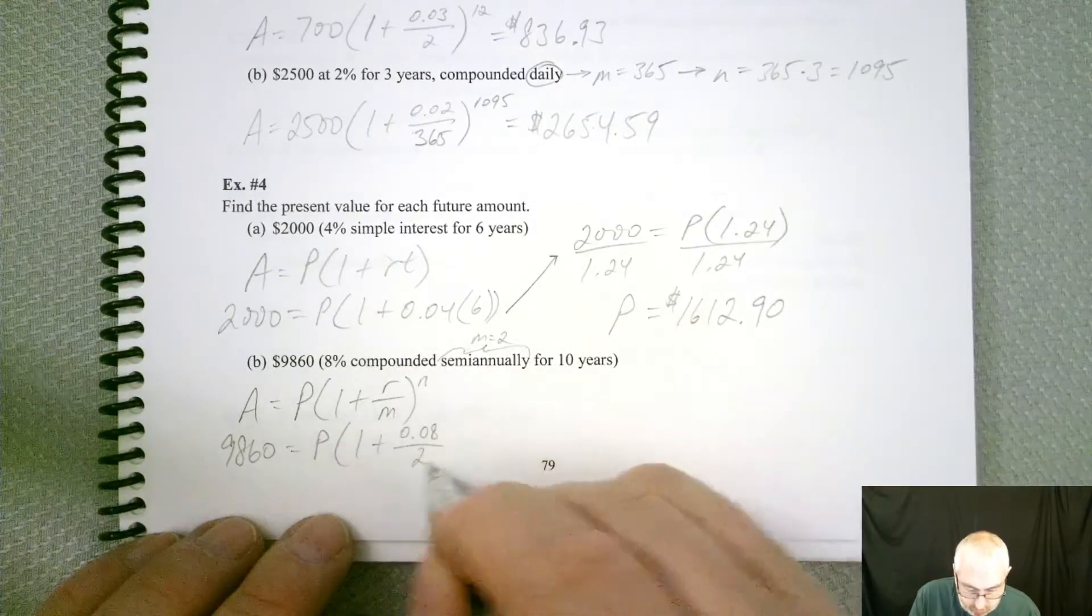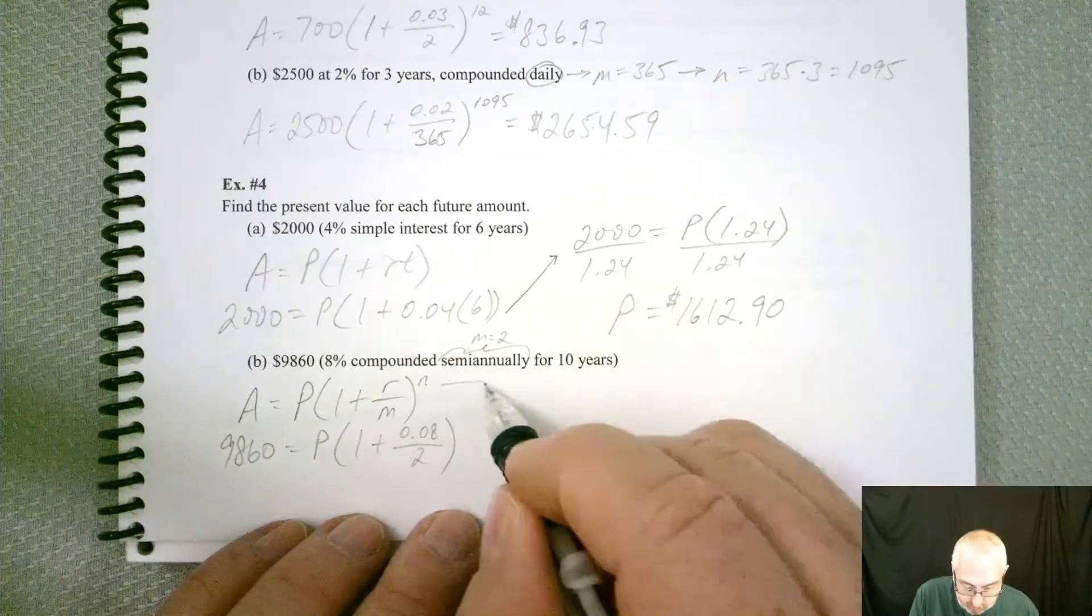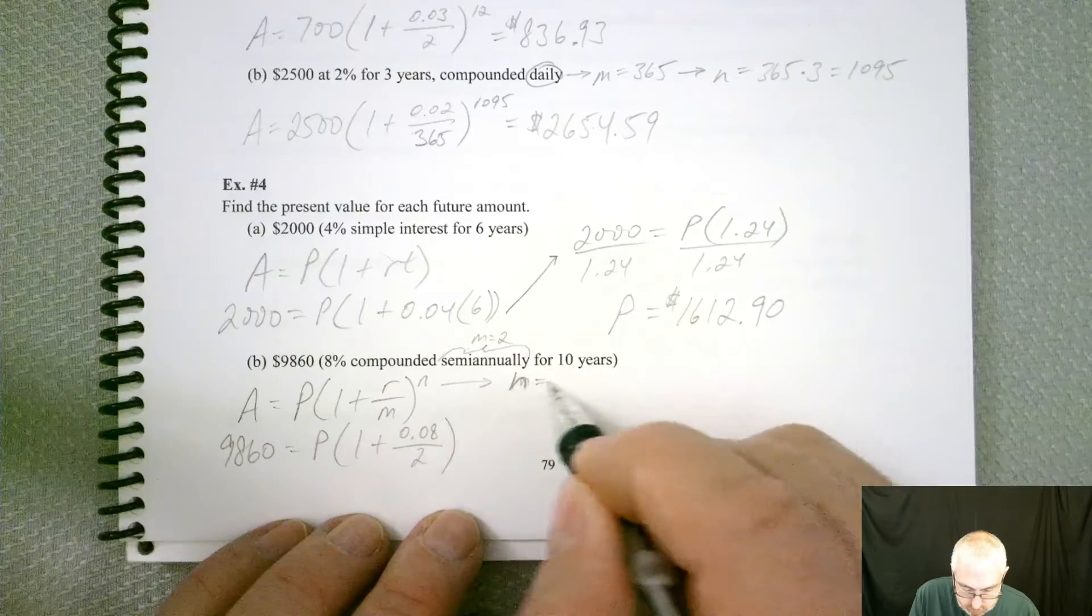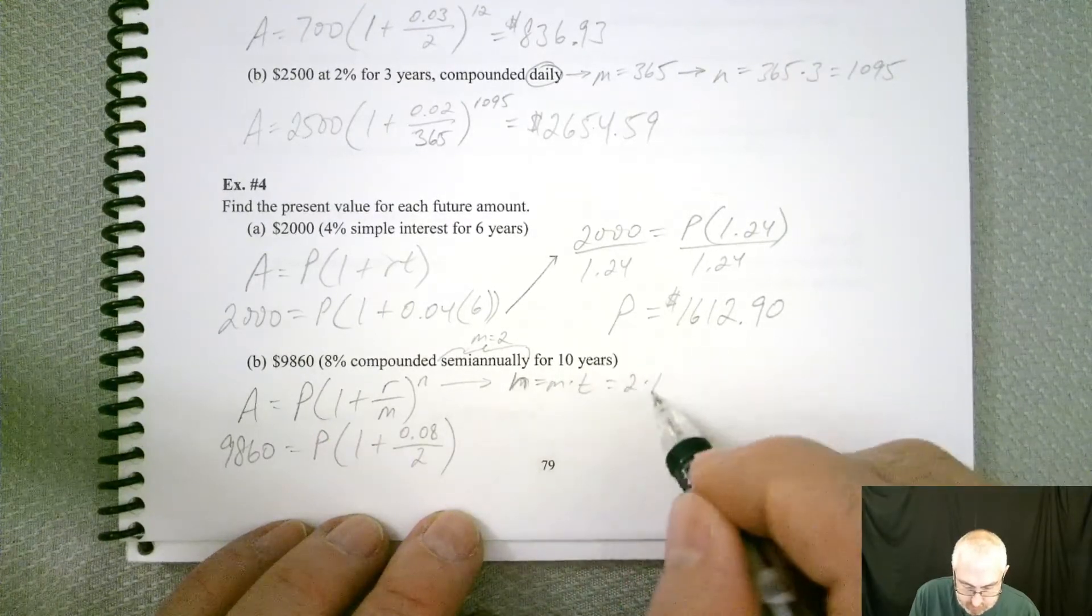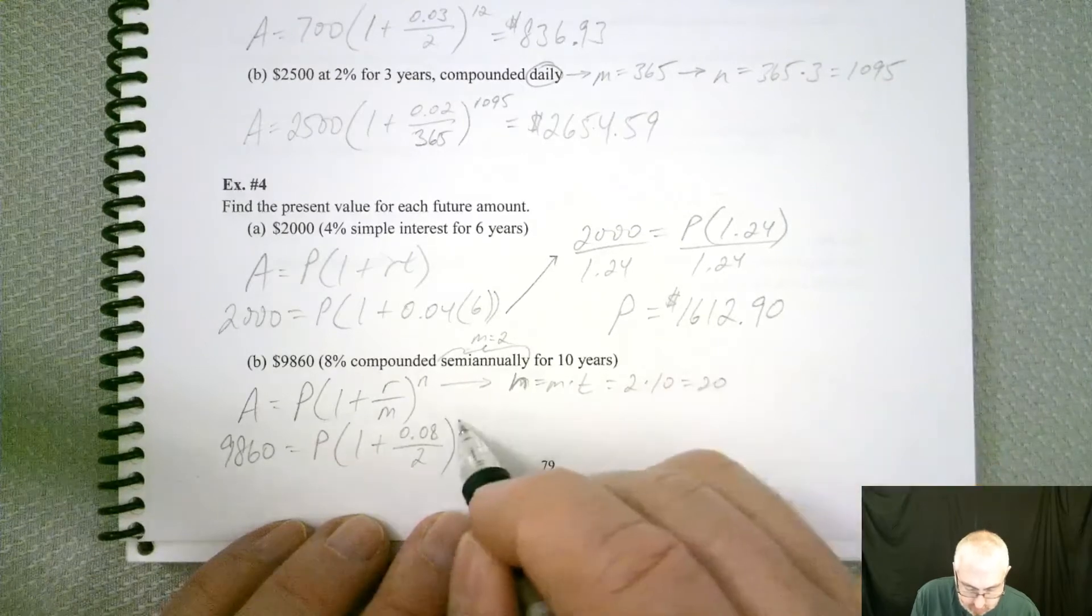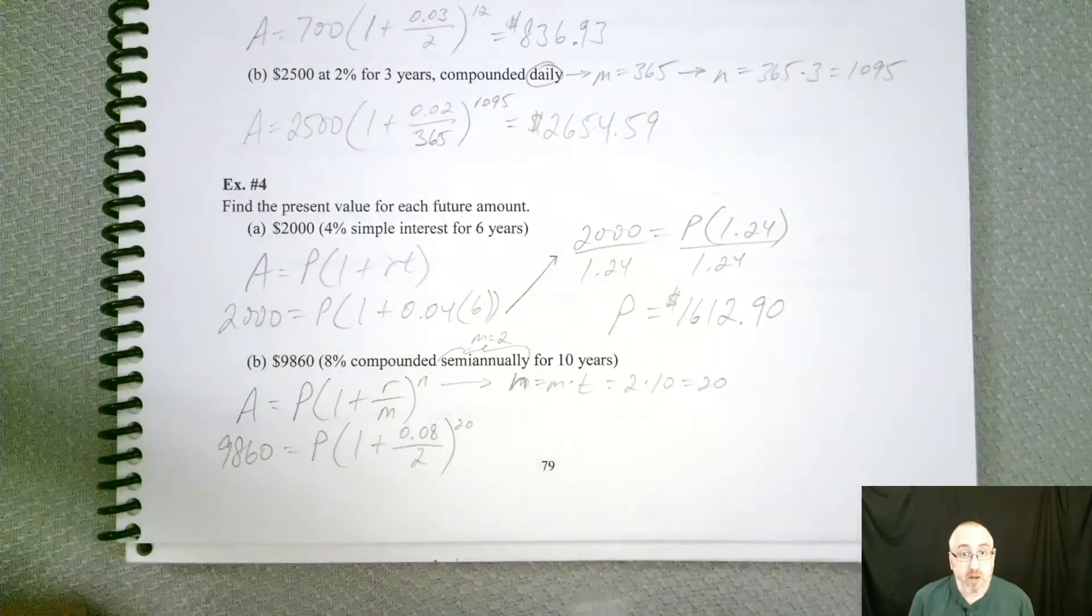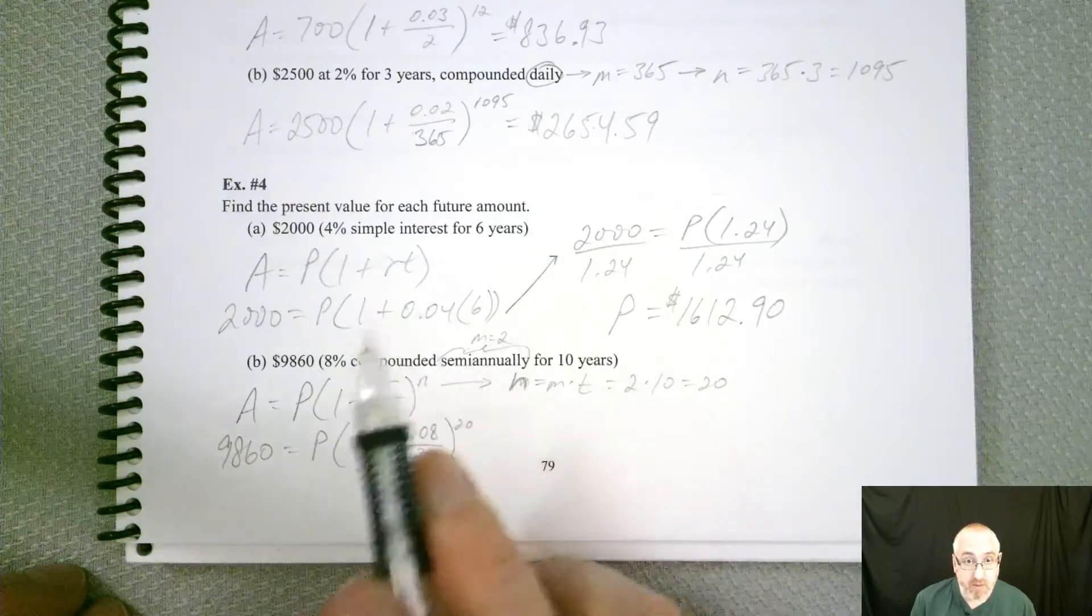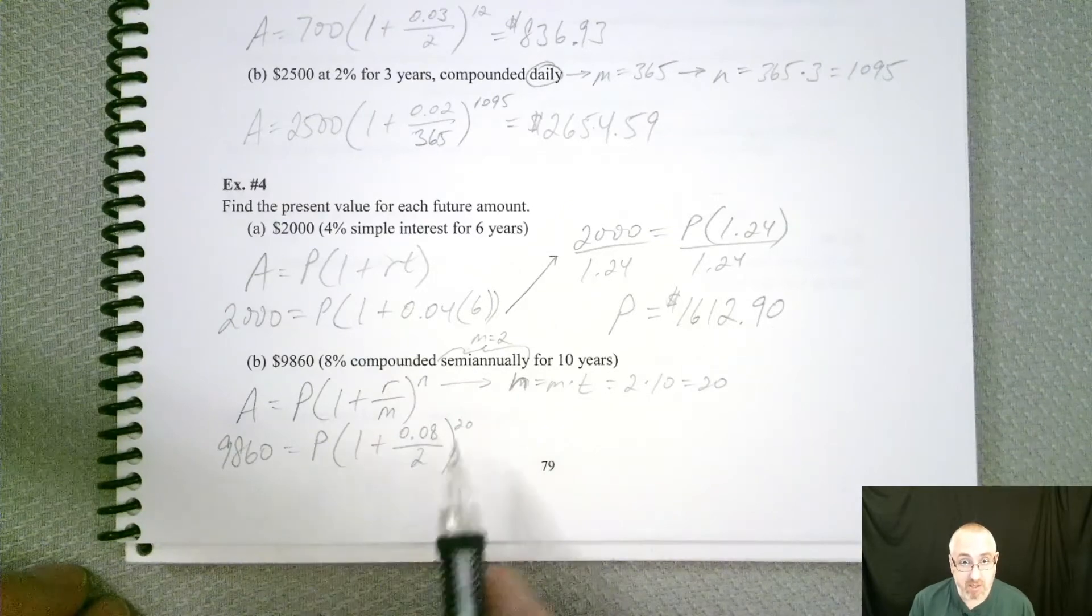So we got 2 for our m. And then n, remember, is always m times t. So 2 times 10, which is 20. Well, we still got to do the same thing we did up here. We got to simplify the parentheses and find out what that number is next to the P. So let's do all that.